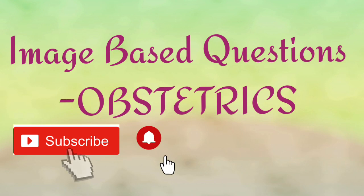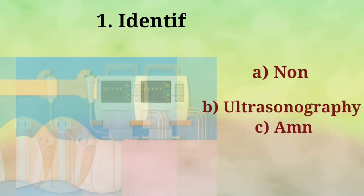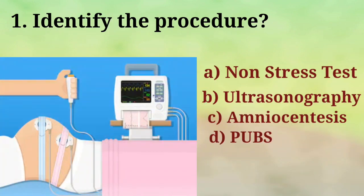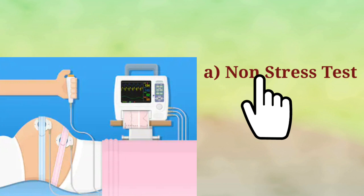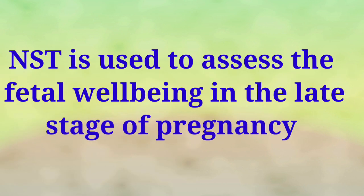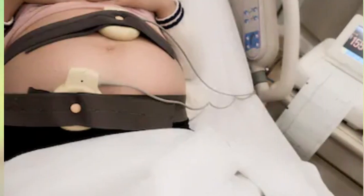Hi all, now we'll discuss some image-based questions and solutions. Number one: identify the procedure. Option A: Non-stress test, Option B: Ultrasonography, Option C: Amniocentesis, Option D: PUBS. The correct answer is Option A, Non-stress test. NST is used to assess the fetal wellbeing in the late stage of pregnancy and it is used to check the fetal heart rate in response to fetal movements.